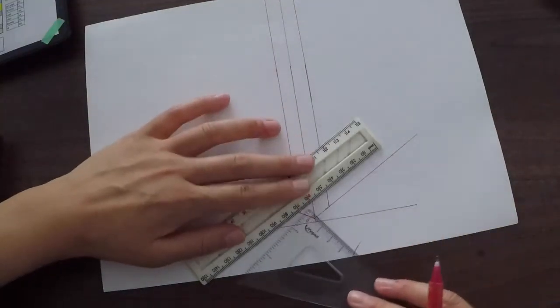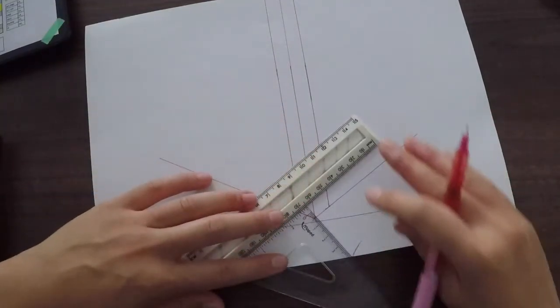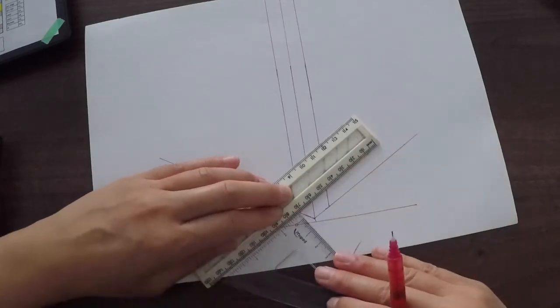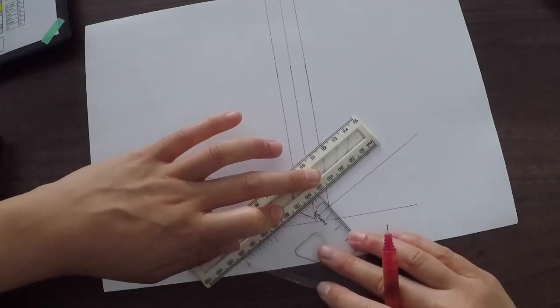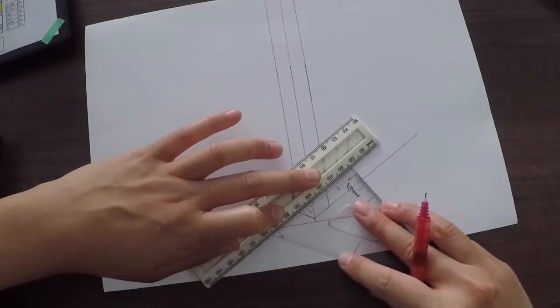Sometimes you might want to use a ruler and place it against here. And let's say along here, it's about 0.5 centimeters. And if I was to move up, you want to keep that the same.